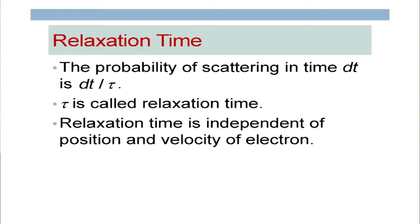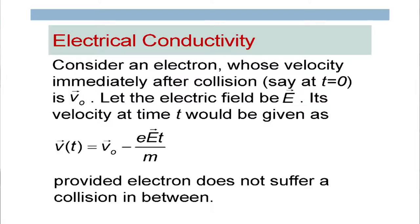Like kinetic theory of gases, he introduced the concept of relaxation time: the probability that an electron will get scattered in time dt is proportional to dt/τ. Tau is called the relaxation time, and it was assumed to be independent of both position and velocity of the electrons. Using this idea, he could derive Ohm's law.